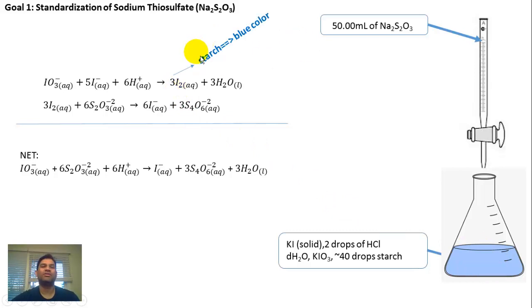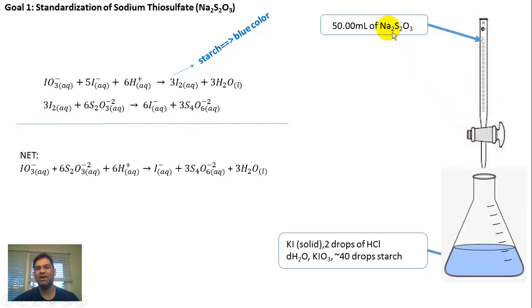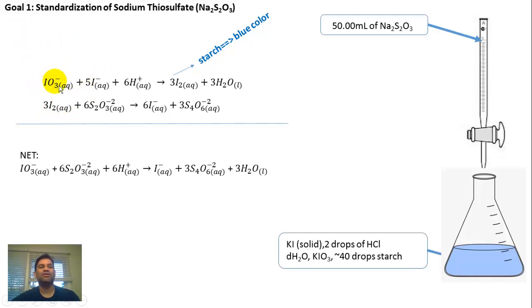The I2 will actually react with the starch that's put in the flask to give you a blue color. The minute you start adding Na2S2O3 — the sodium is a spectator ion, so we're really concerned with S2O3²- — it's going to react with the I2 until all of it is gone. The titration is over when the blue color disappears.